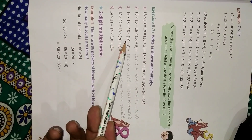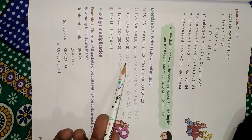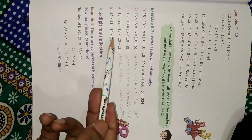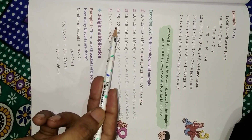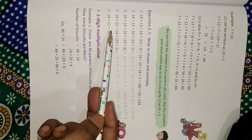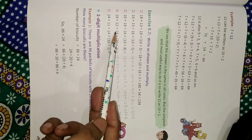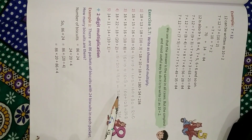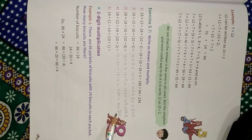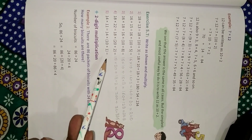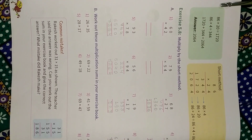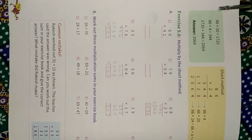In the third part, we break 18 into 10 plus 8, so 16 into 10 plus 16 into 8, and the answer is 288. In the fourth part, we break 22 into 20 plus 2, so first we multiply 18 by 20 and then 18 by 2: 18 into 20 = 360 and 18 into 2 = 36, and the answer is 396. Now try the fifth part yourself.